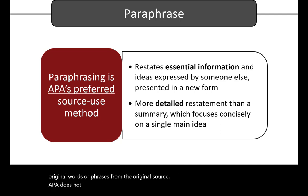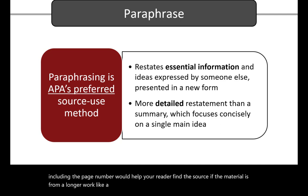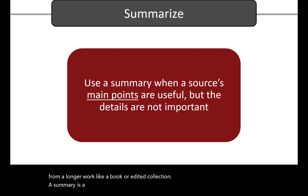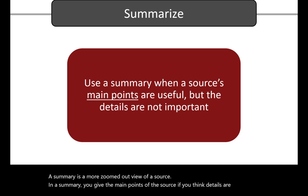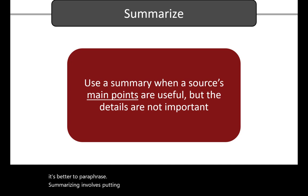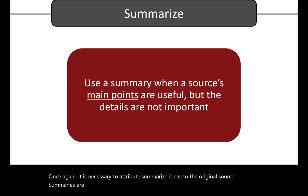APA does not require a page number when paraphrasing, but it's allowed when including the page number would help your reader find the source, like if the material is from a longer work, like a book or edited collection. A summary is a more zoomed out view of a source. In a summary, you give the main points of the source. If you think details are important, it's better to paraphrase. Summarizing involves putting the main ideas into your own words, including only the main points. It is necessary to attribute summarized ideas to the original source. Summaries are significantly shorter than the original source and take a broad overview of the source material.